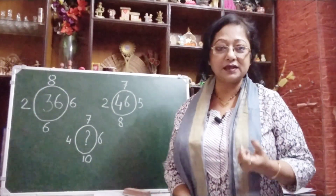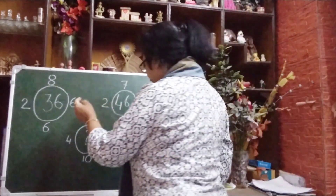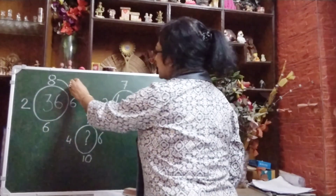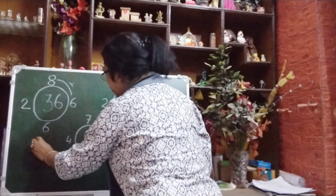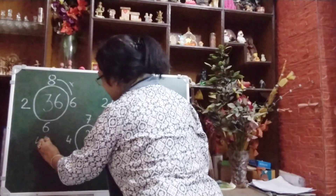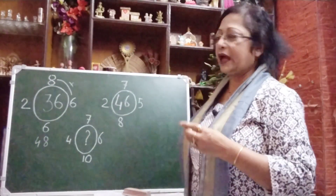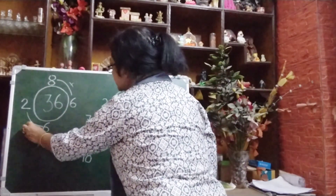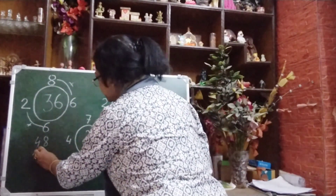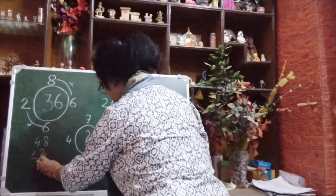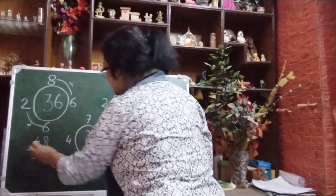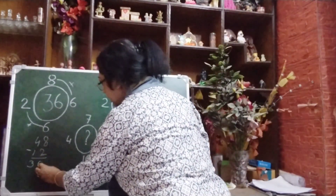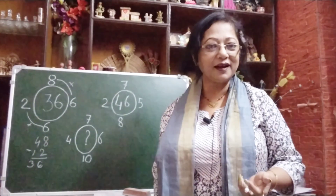Let me multiply 8 and 6 — that gives 48. Then I multiply 6 and 2, which gives 12. If I subtract 12 from 48, I get 36. And here in the middle it is 36 — very nice, this logic is working!